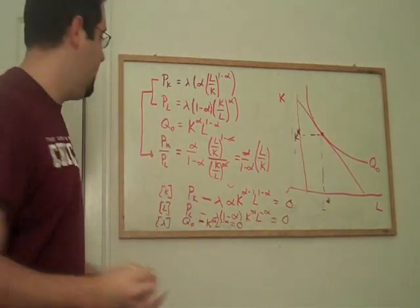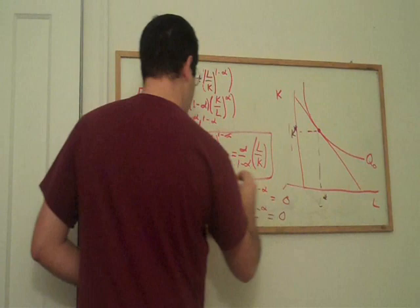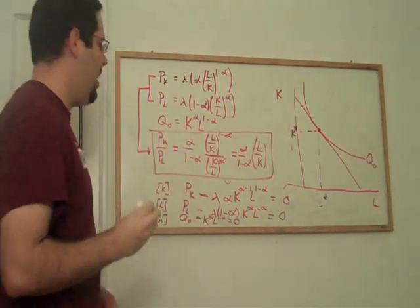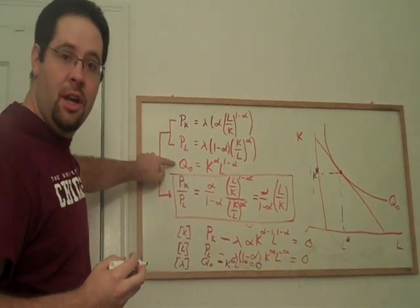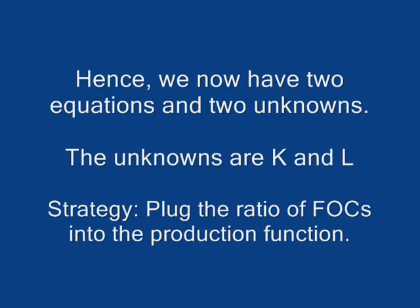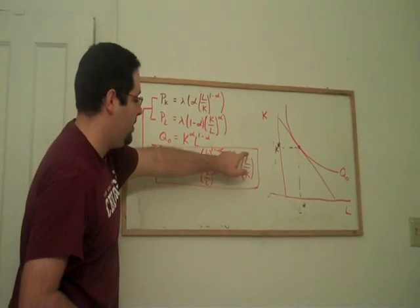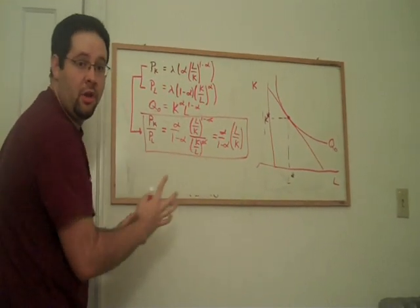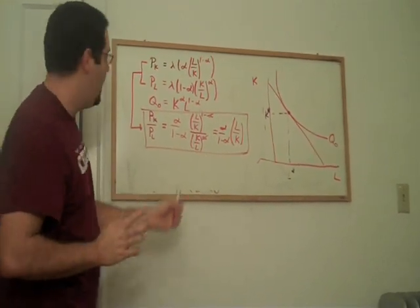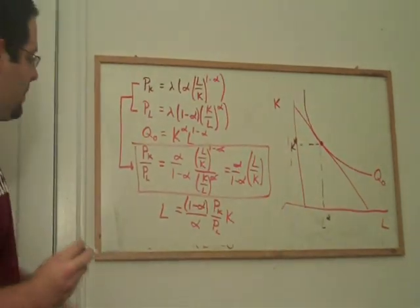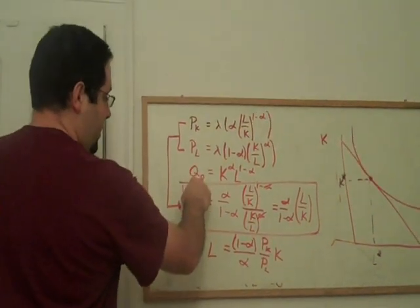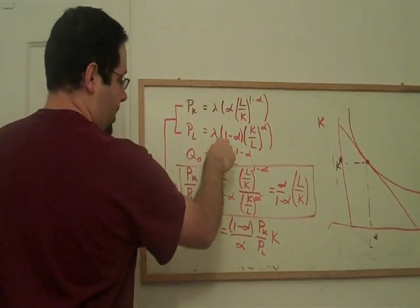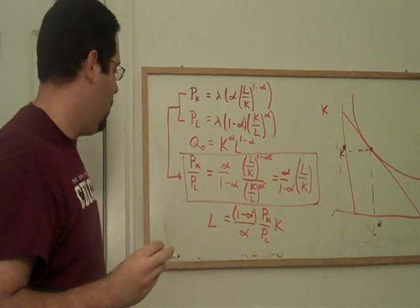Now, this is a pretty simple relationship here between L and K. I have another relationship between L and K that is given by the production function. I'm going to take this equation that's in this box and I'm going to rewrite it as L as a function of K. That's this equation rewritten.